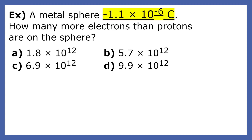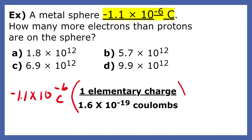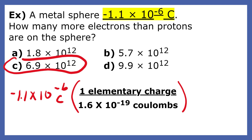A metal sphere has a charge of negative 1.1 times 10 to the negative 6 coulombs. How many more electrons than protons are on this sphere? To find the number of electrons, we need to multiply the total charge by the following conversion factor. Since 1 elementary charge equals 1.6 times 10 to the negative 19th coulombs, we multiply by 1 and divide by 1.6 times 10 to the negative 19th coulombs. Make sure you include parentheses before and after the 1.6 times 10 to the negative 19th coulombs.